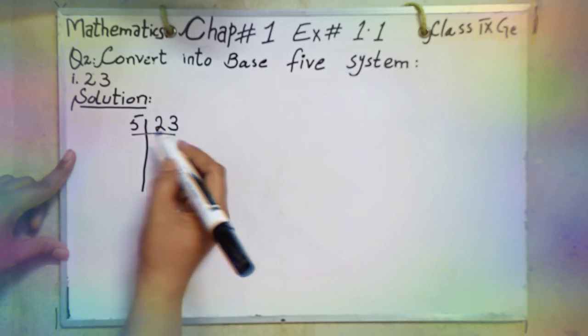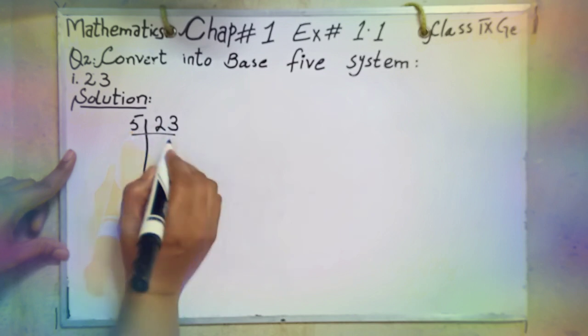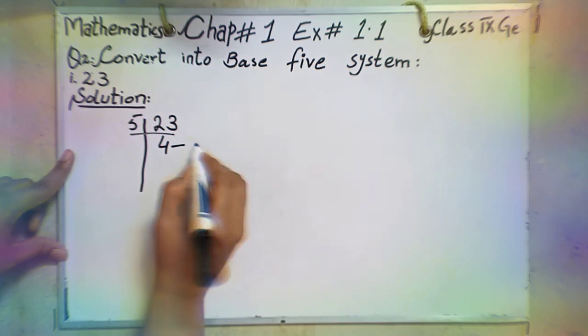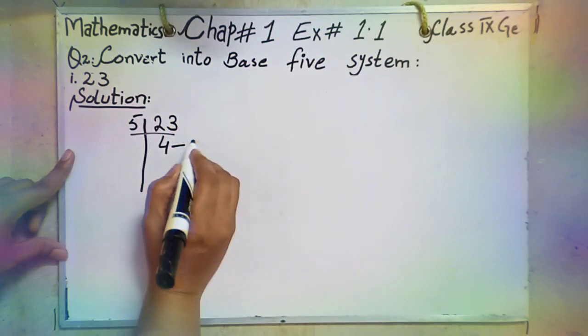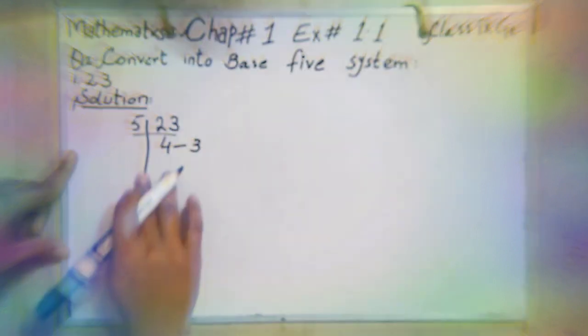25 is a bigger number than 23, so we will take 5 fours, 20. 23 minus 20, 3 is left. So 43 is answer.